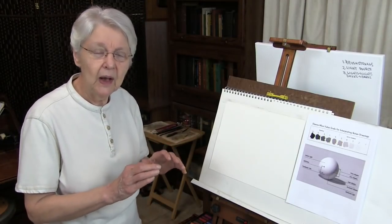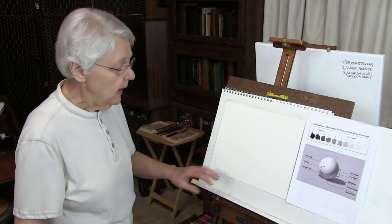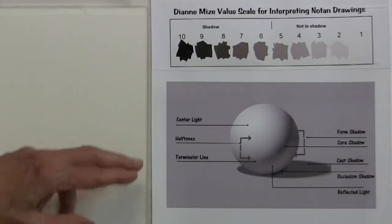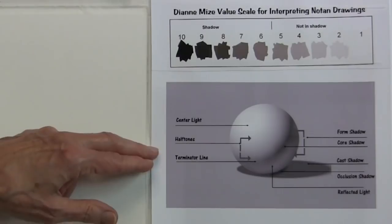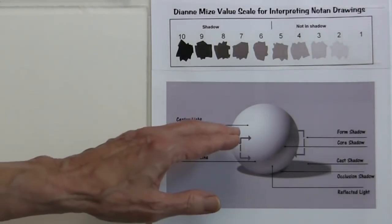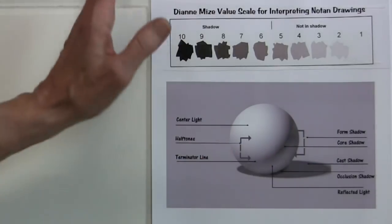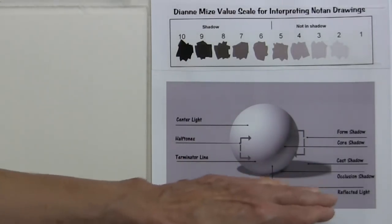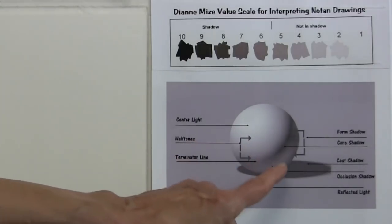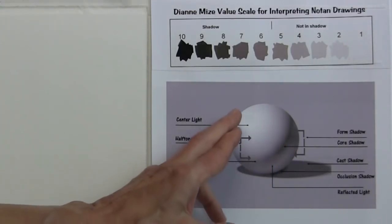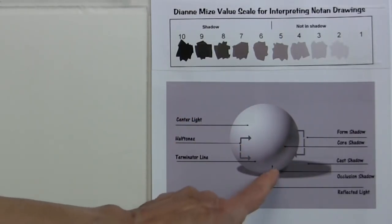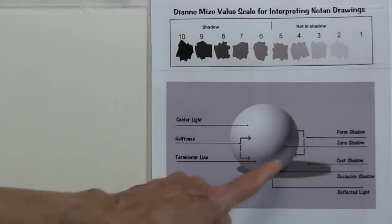Let's do a whole analysis of what happens in light and shadow, beginning with a generic shape like a ball. You see here I have a diagram — that's a ball with light cast on it. Of course we have the shadow side and we have the cast shadow. Sure enough, on the shadow side, as the shadow moves away from the light, there's this little light. Where does that come from?